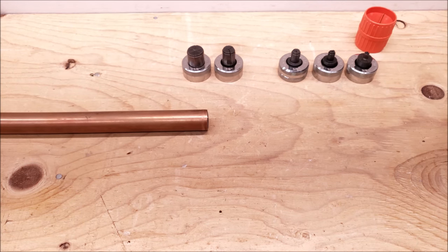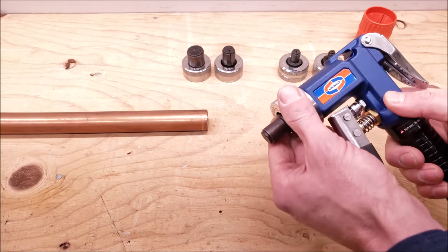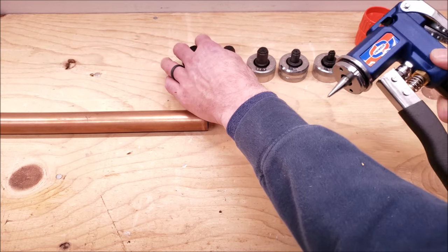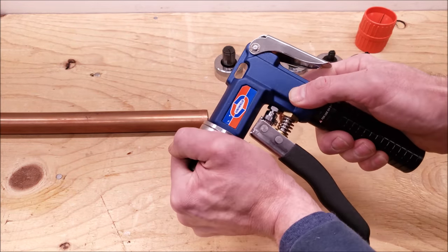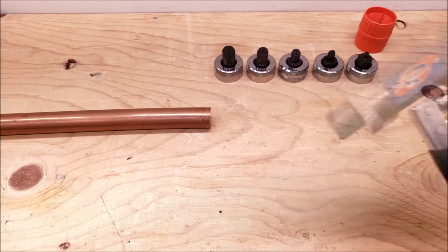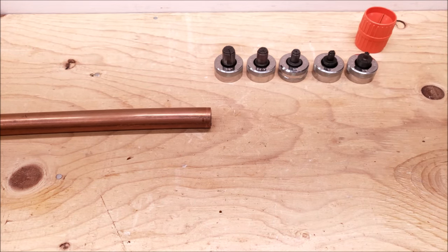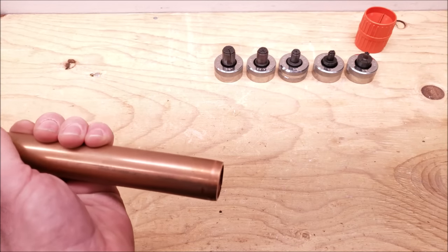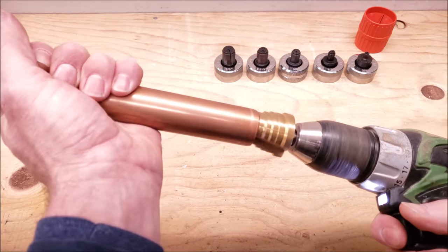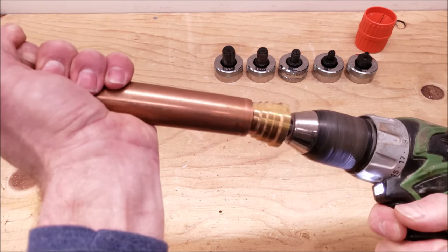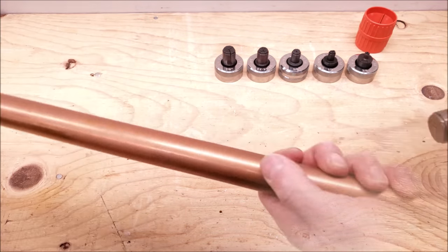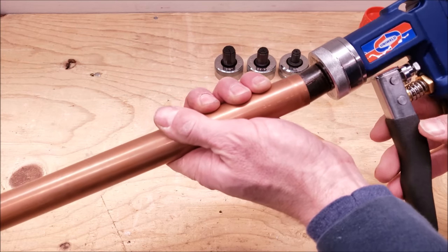Now we're going to go ahead and swedge our inch and eighth copper tubing. So we just go ahead and slip this one off. Just like that. And we'll go ahead and ream our copper tubing.